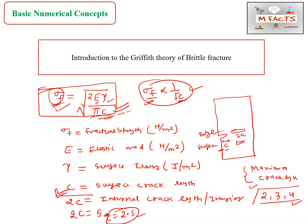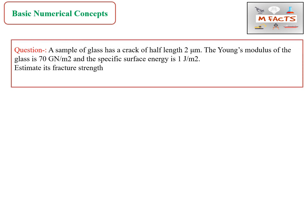Now we will look at problems. The first question: a sample of glass has a crack of half-length 2 micrometers. Since a half-length is given, this is a surface crack or edge crack. The Young's modulus of glass is 70 giganewton per meter square and the specific surface energy is 1 Joule per meter square. We need to estimate its fracture strength in megapascals.